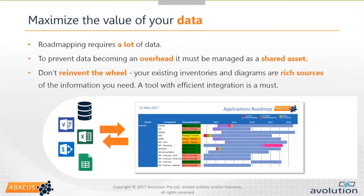Don't reinvent the wheel — don't go out and gather all this data fresh. You have this data in your enterprise already, in existing inventories like CMDBs or diagrams with lists of applications or processes. These are all rich sources of information you can use to accelerate your road mapping. Going back to the tooling question, you need some way of actually scooping that data in — integration is a must when it comes to bringing that data in.